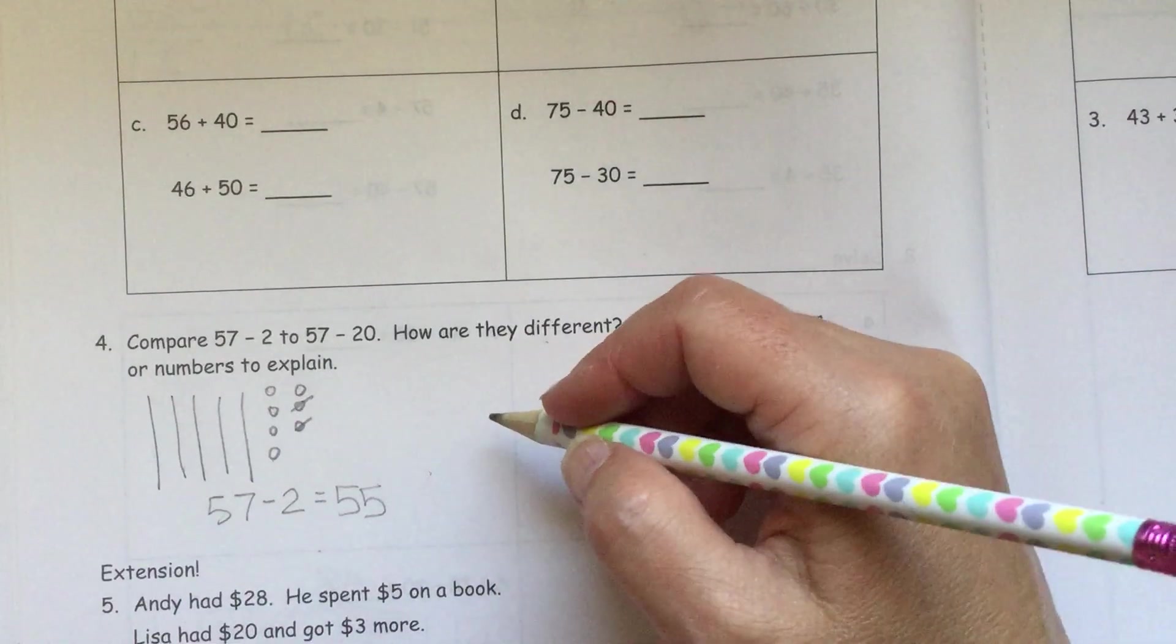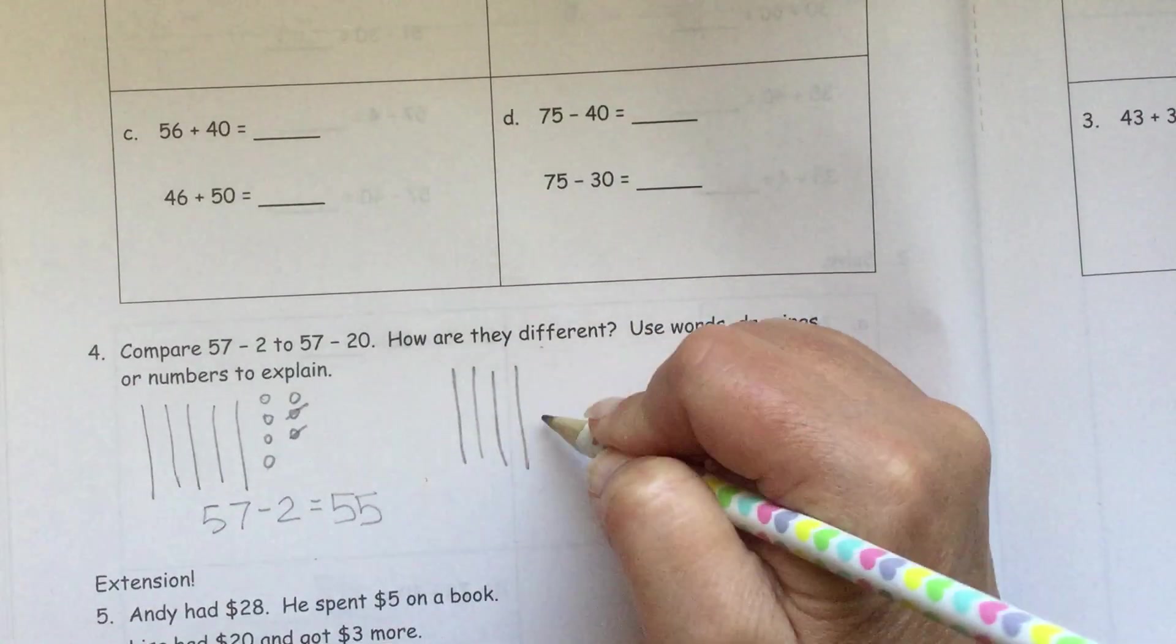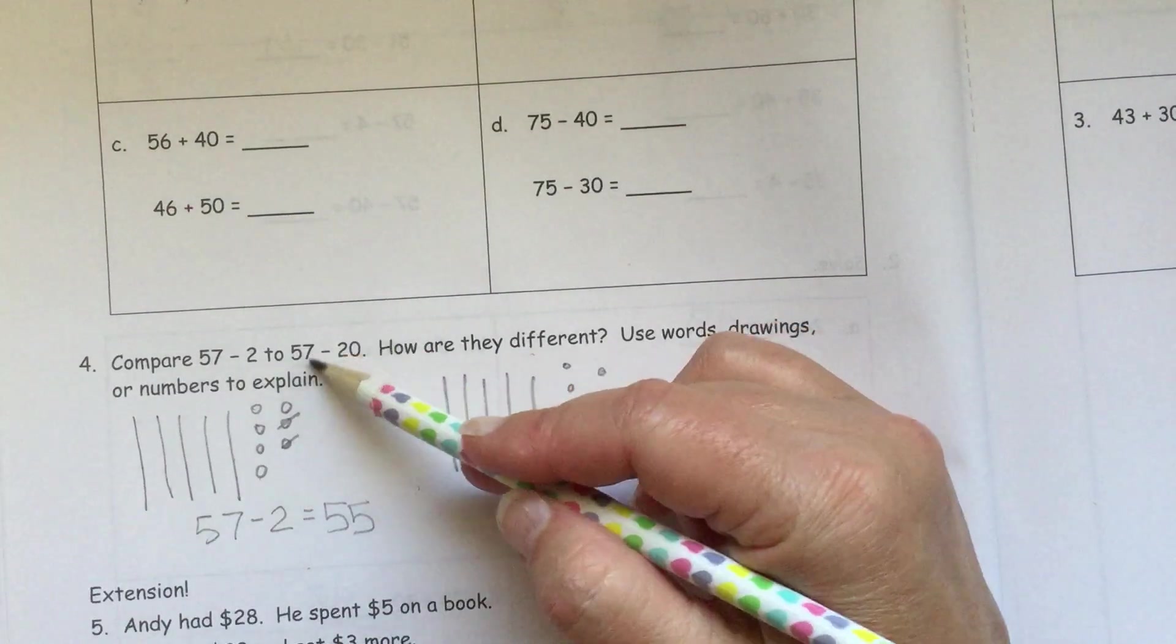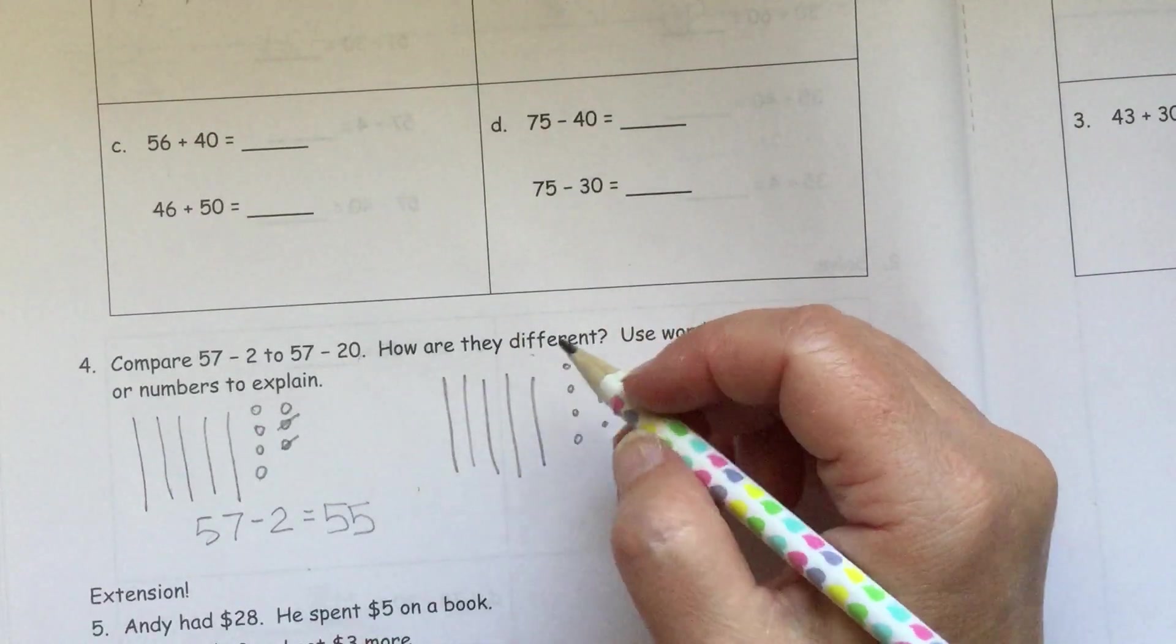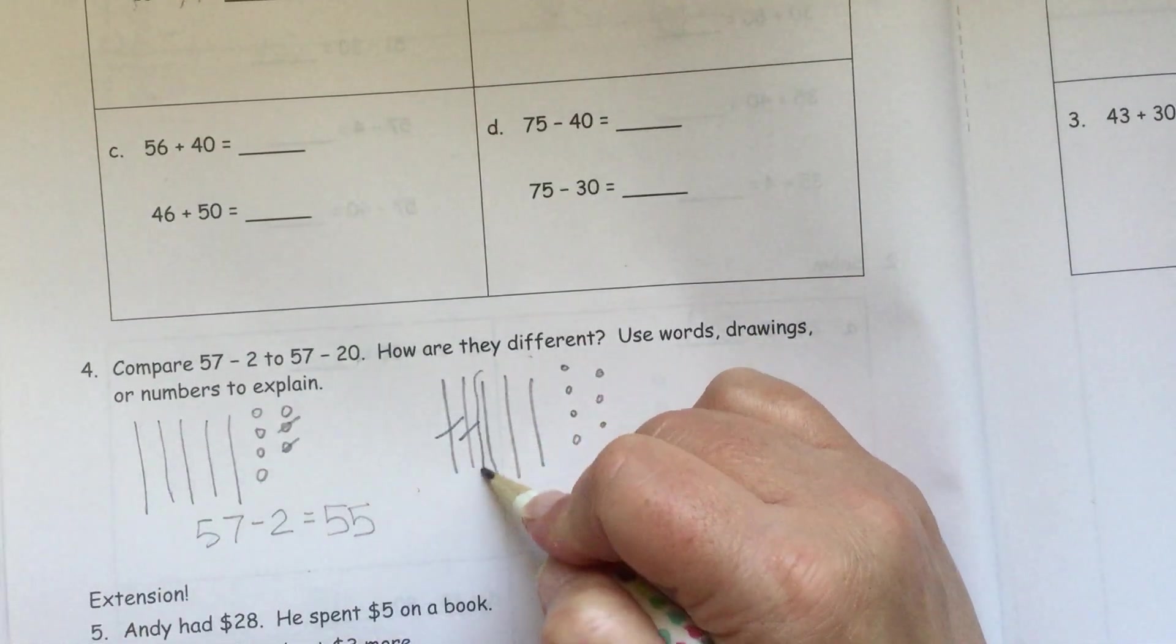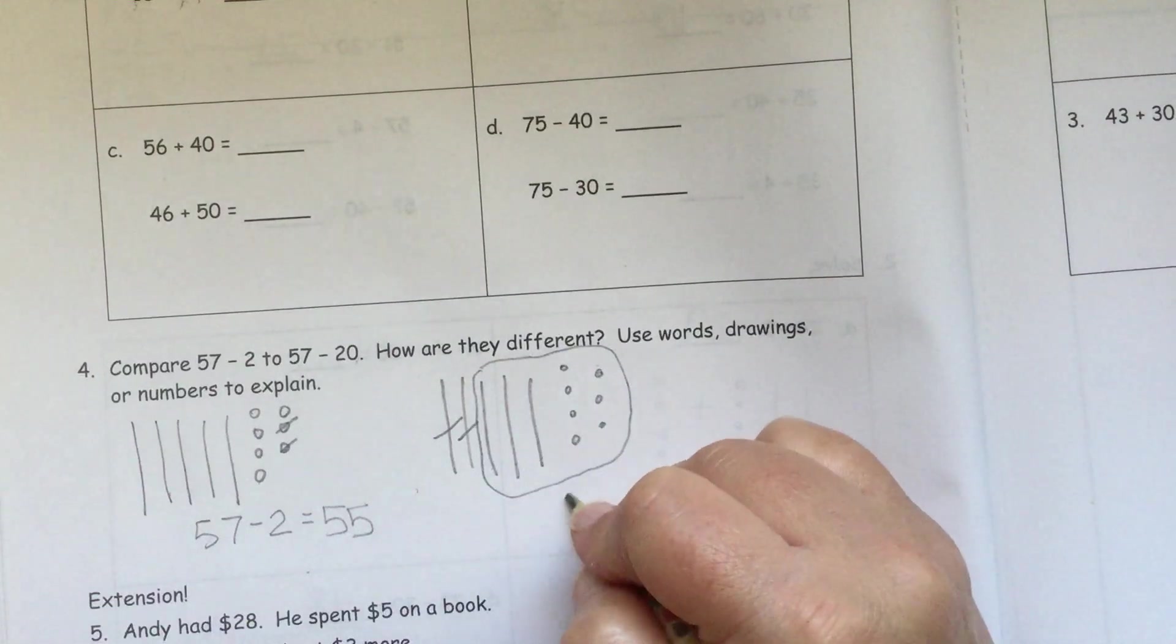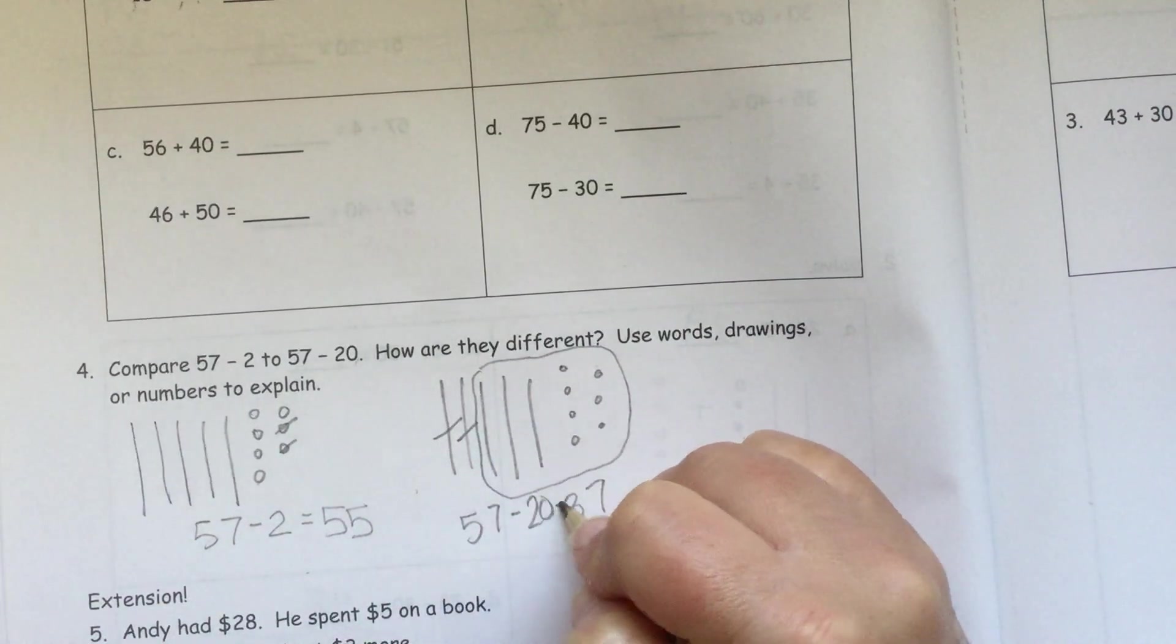Now we have 57. 57, so that's 10, 20, 30, 40, 50, 50, 7, 1, 2, 3, 4, 5, 6, 7, minus 20. So we're going to leave that 1s column alone. We're not taking away any 1s. But we're going to take away 2 10s. So take away 2 of those 10s. And what we're left with here, we have 10, 20, 30, 31, 32, 33, 34, 35, 36, 37. So 57 minus 20 equals 37.